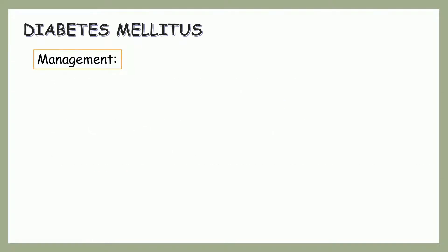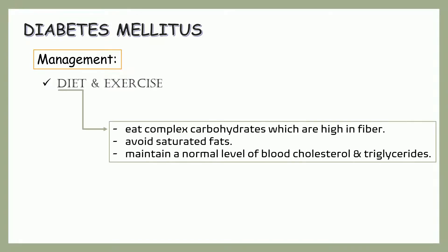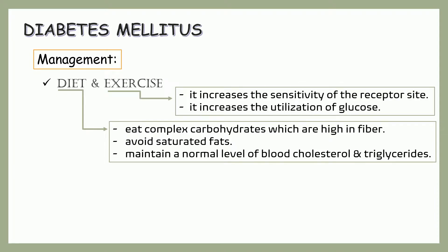Let's now proceed to the management in general. First is diet and exercise. Avoid simple carbohydrates and prefer to eat complex carbohydrates, which are high in fiber. Avoid also saturated fats. You should maintain your blood cholesterol and triglycerides level at a normal range. Appropriate regular exercise is also important because it increases the sensitivity of the receptor site, thus helping with the problem of insulin resistance. It also increases the utilization of glucose if not enough insulin is being produced by the beta cells.